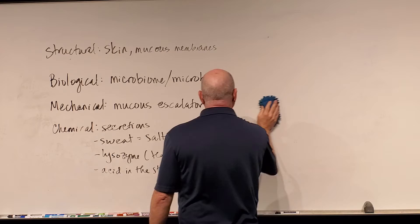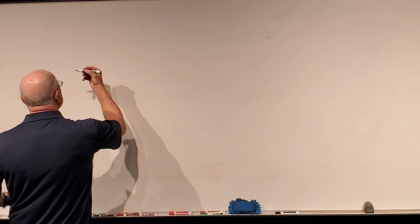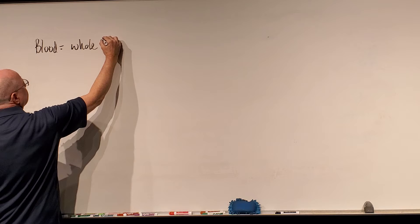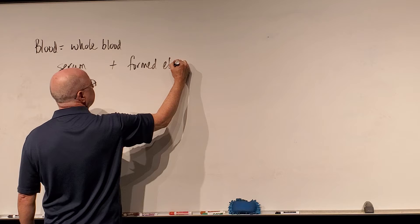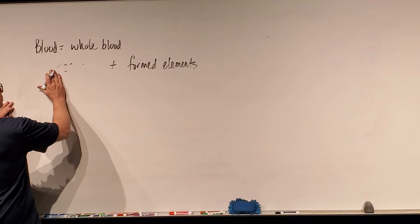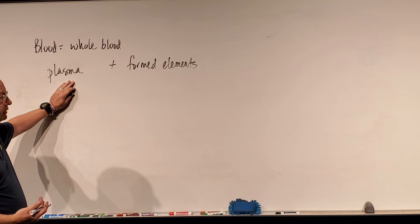The second line of defense is the innate immune system. In order to understand the innate immune system, we have to talk about certain white blood cells. When we talk about our blood — whole blood — it's made up of two components: plasma plus the formed elements. Within plasma, there's a whole bunch of chemical components dissolved in it that can play a role in our immunity. But what we're going to focus on right now is the formed elements.